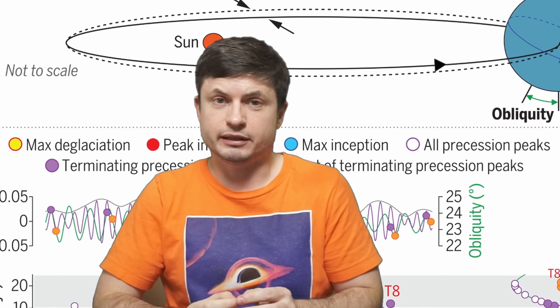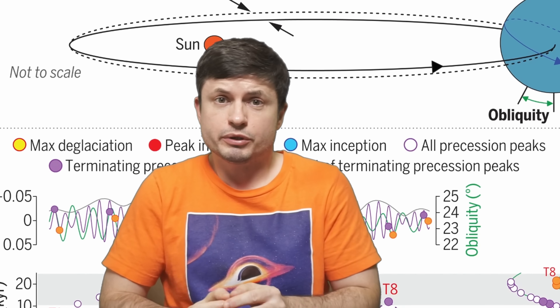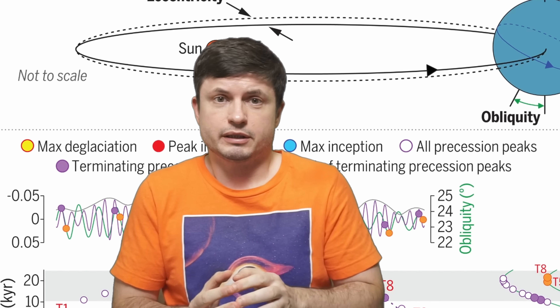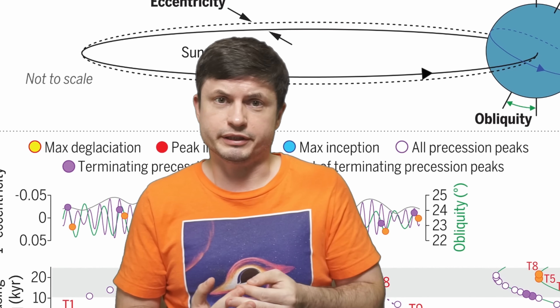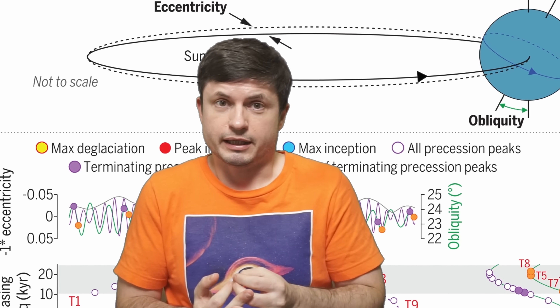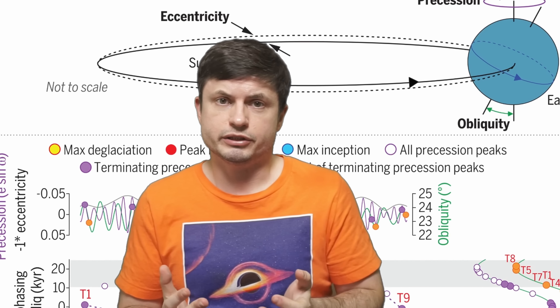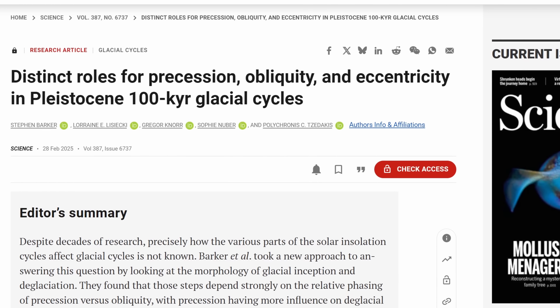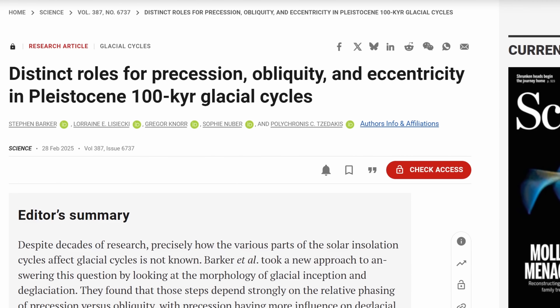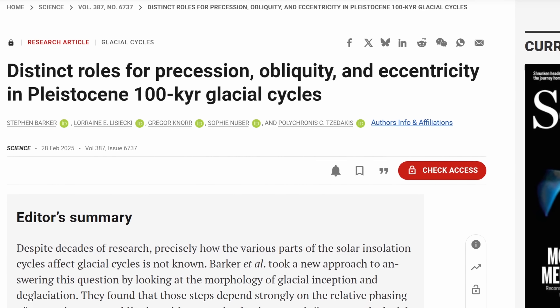Hello, wonderful person. This is Anton, and in this video we're going to discuss some of the recent discoveries in regards to the phenomenon known as the Milankovitch cycles and their effects on the glaciation periods, or the ice ages, on planet Earth. Specifically, we're going to talk about a recent study by Stephen Barker and his team that potentially discovers the exact cycles responsible for the glaciation periods and even predicts the beginning of the next ice age.